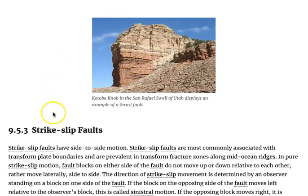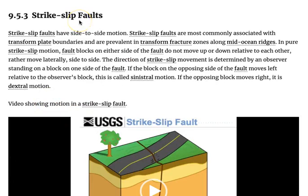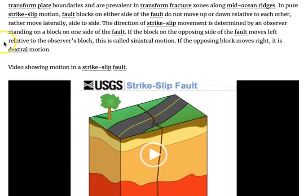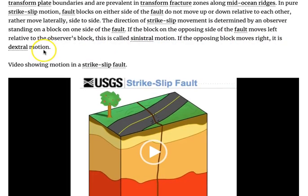Strike-slip faults have side to side motion. Strike-slip faults are most commonly associated with transform plate boundaries and are prevalent in transform fracture zones along the mid-ocean ridge. In pure strike-slip motion, fault blocks on either side of the fault do not move up or down relative to each other, but rather move laterally, side to side. The direction of strike-slip movement is determined by an observer standing on one block. If the opposing block moves left, it is called sinistral or left lateral motion. If the opposing block moves right, it is dextral or right lateral motion.